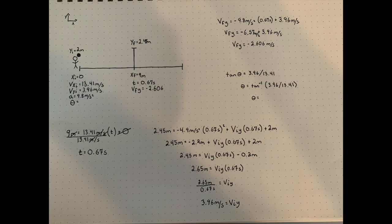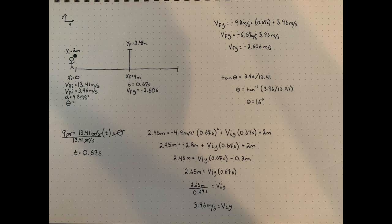Lastly we'll find the angle that I need to serve the volleyball. With our initial x velocity and our initial y velocity we can solve for that angle by taking the inverse tan of the initial y velocity divided by the initial x velocity, which gives us an angle of 16 degrees.